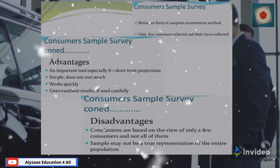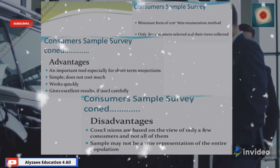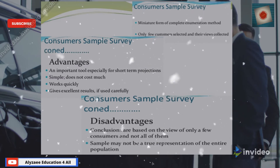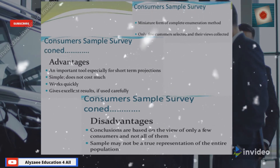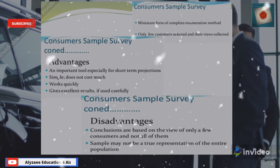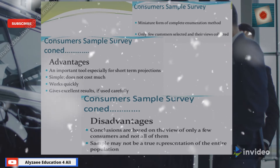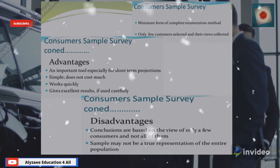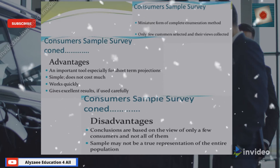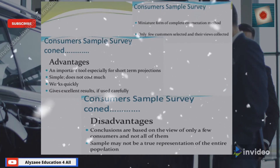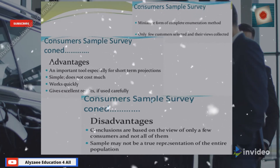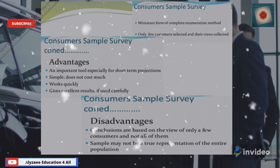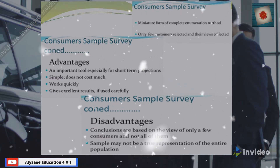The sample survey is a miniature form of the complete enumeration method — only a few consumers are selected and their views collected. The advantages are that it is an important tool especially for short-term projections: simple, does not cost much, works quickly, and gives excellent results if used carefully.